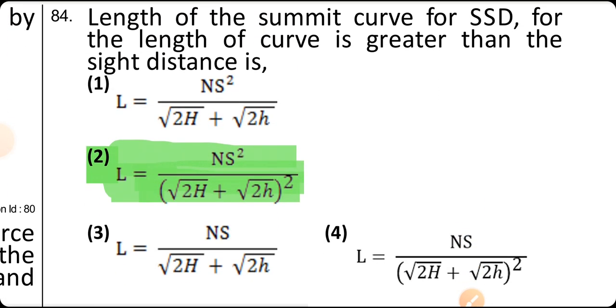Length of a summit curve for stopping sight distance, when the length of curve is greater than the sight distance, is L = NS²/(√(2H) + √(2H'))².